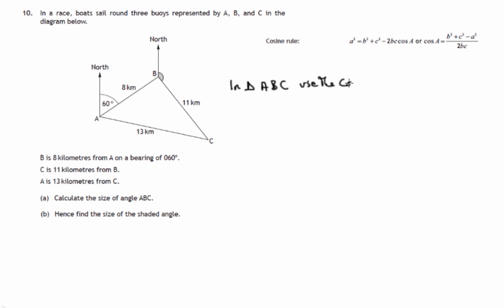Use the cosine rule. And we would have cos B is equal to A squared plus C squared minus B squared all over 2AC.